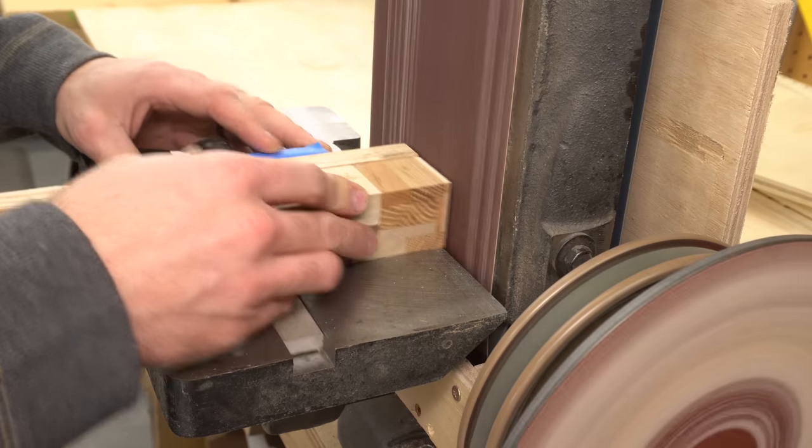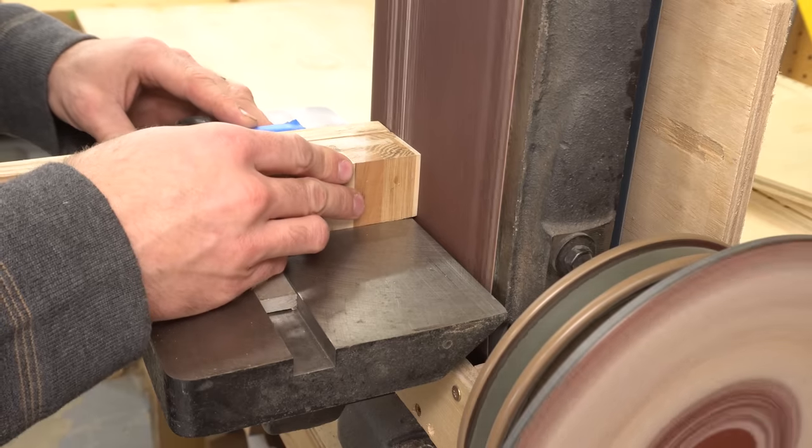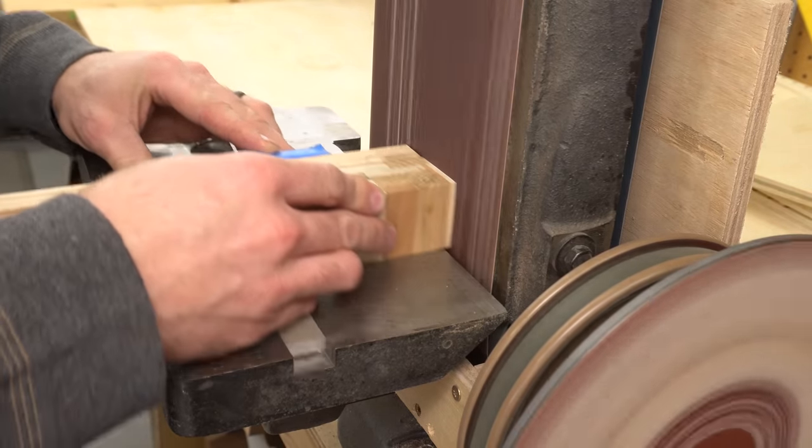After the epoxy hardened, I used my belt sander to slowly remove material until the ends of the blanks were flush with the tubes. This step is basically accomplishing the same thing that a barrel trimmer does on a pen.